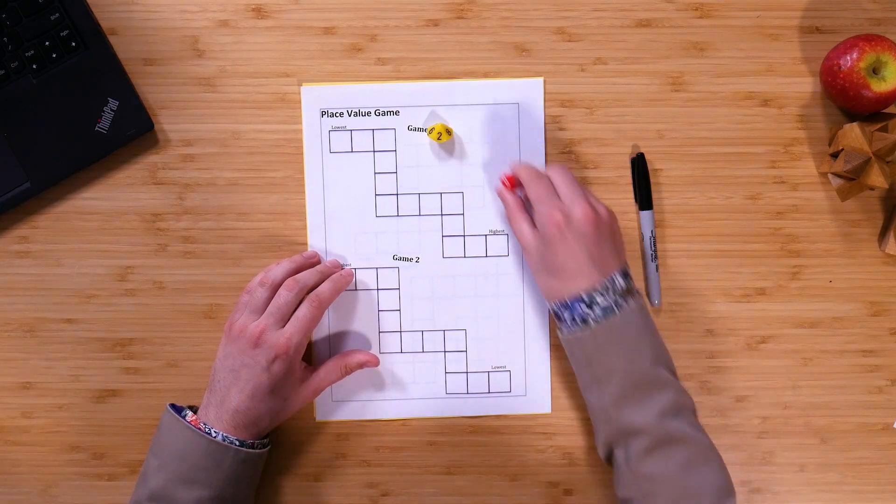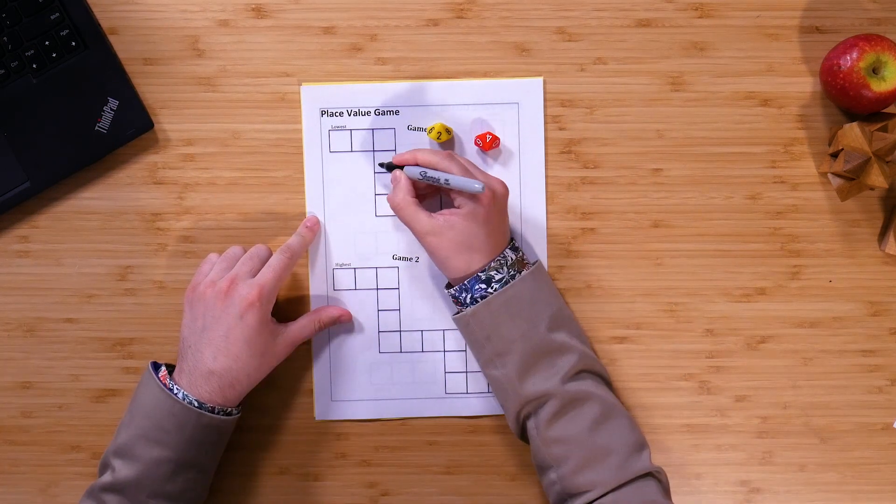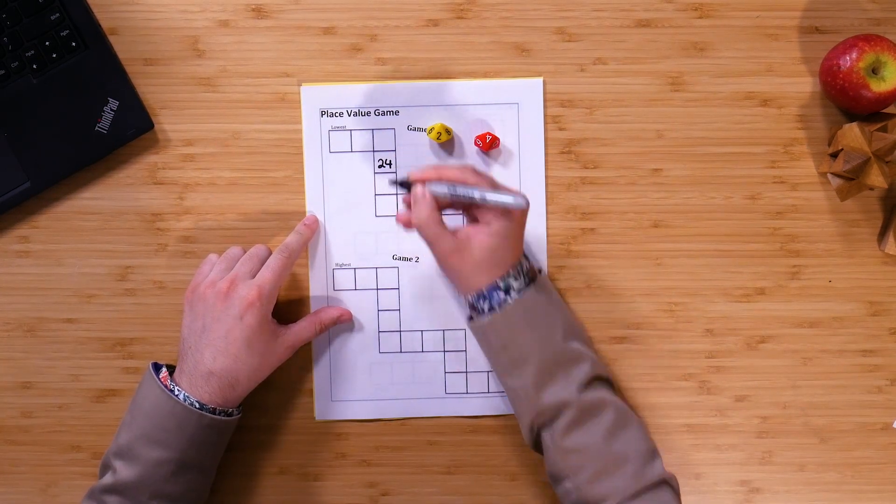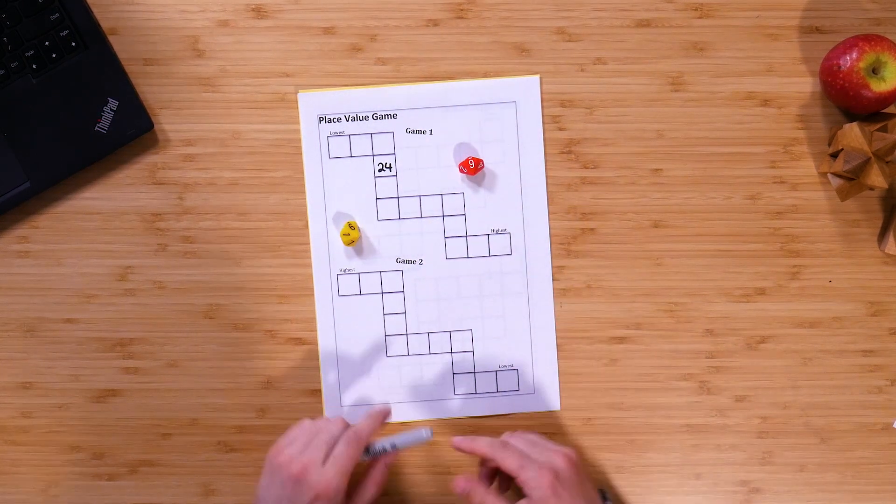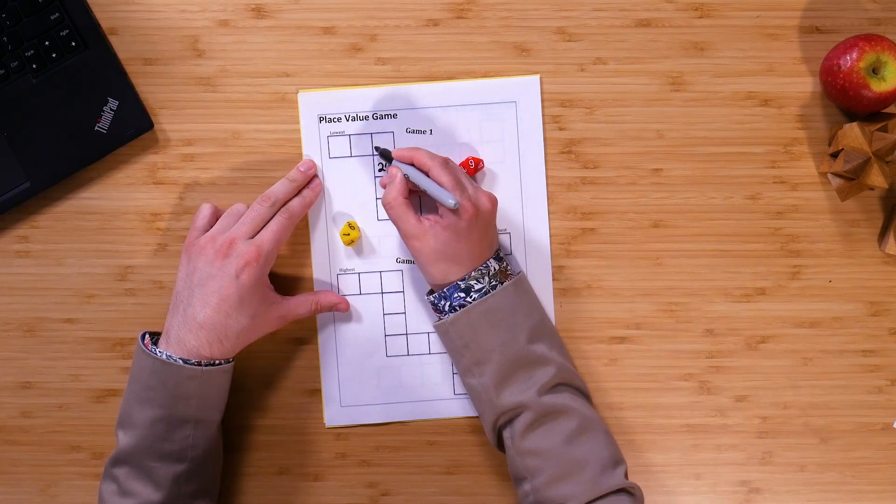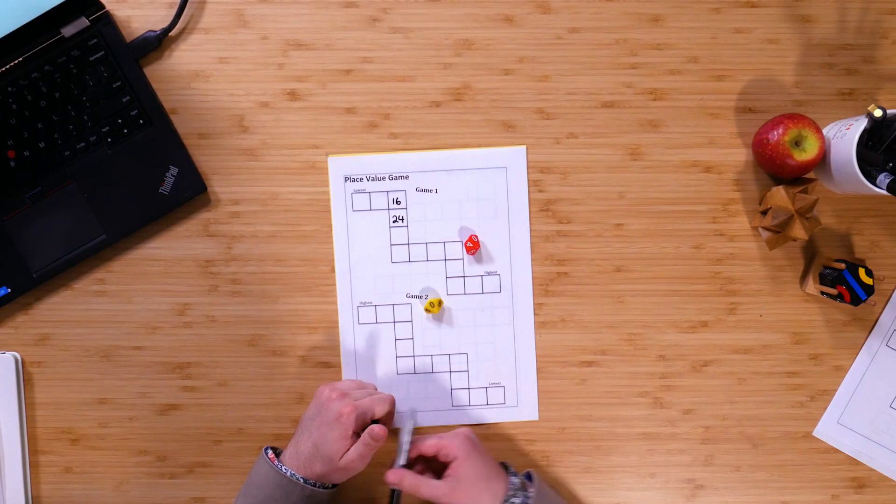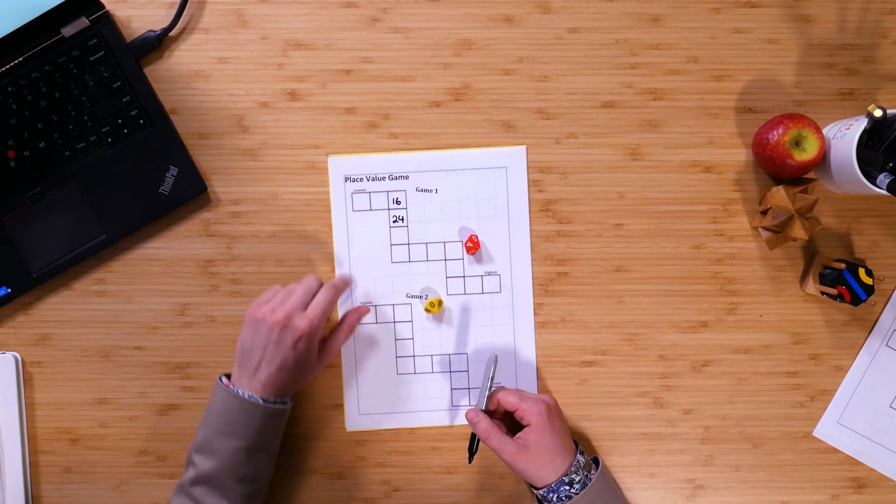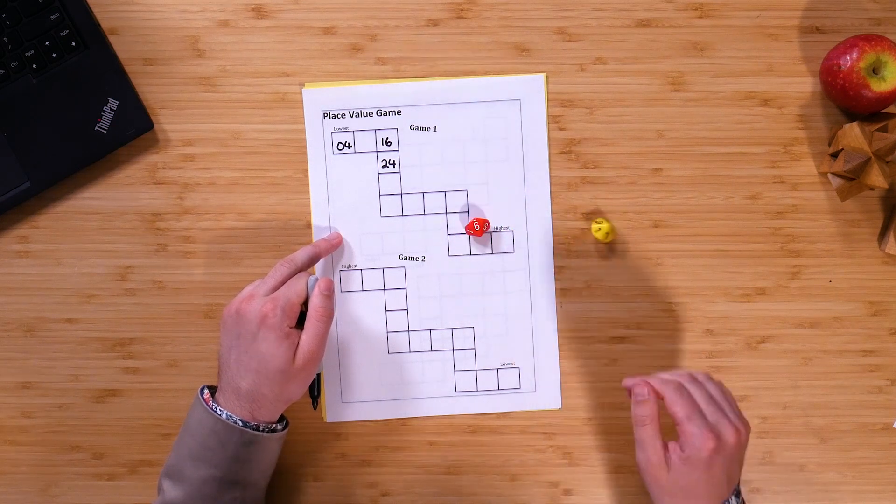If I roll again, I've got a 4 and a 2, so that can either be 42 or 24. I'm going to choose to make that 24 and place it right here. I'll roll again and that's a 1 and a 6, so that can either be 16 or 61. I like the idea of it being 16 and I'll put that here. I'll roll again, a 0 and a 4, so that could be either 40 or 4. I might choose to make that 4 and put it down here. I'll do a couple more just so we can get the right idea.